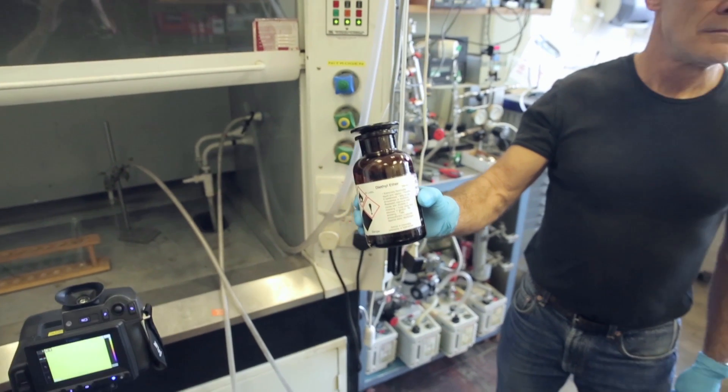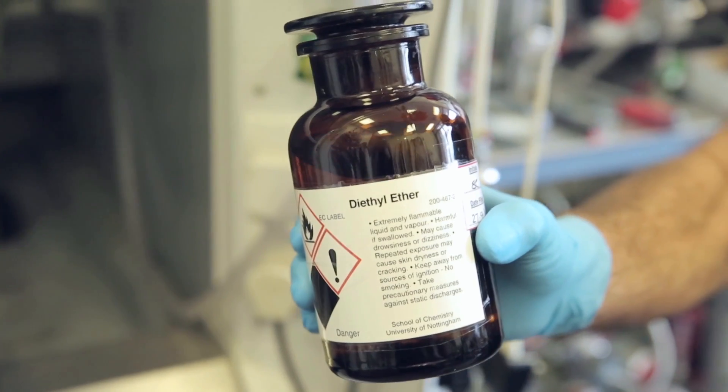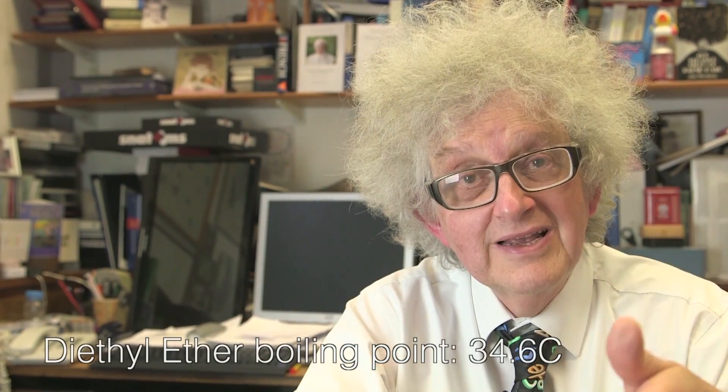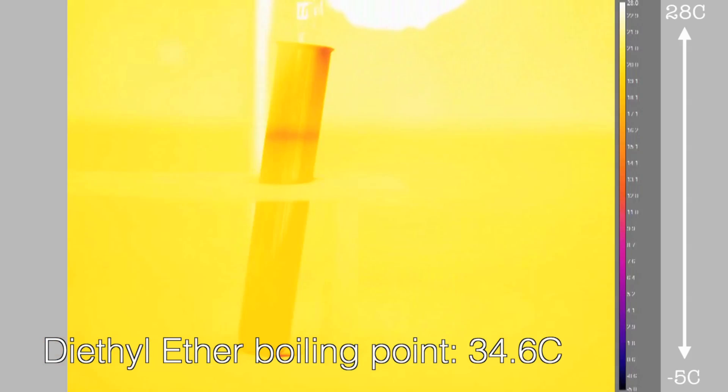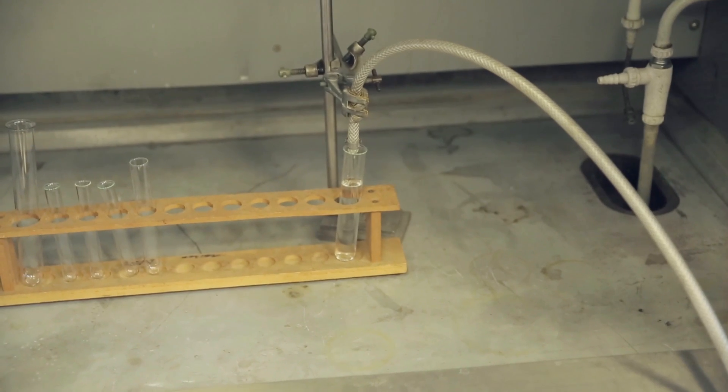It consists of a test tube in a test tube rack filled nearly to the top with diethyl ether. The point about diethyl ether is that it's very volatile. Its boiling point is just above room temperature, and so you can get it to evaporate by blowing air through it, but it's better to use nitrogen because it's pretty inflammable.